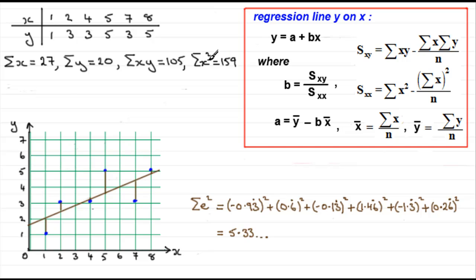And if we were to do the sum of all the x squared numbers, 1 squared plus 2 squared plus 4 squared and so on, it comes to 159. We can use these summary statistics to work out then what the equation of the line of best fit is.